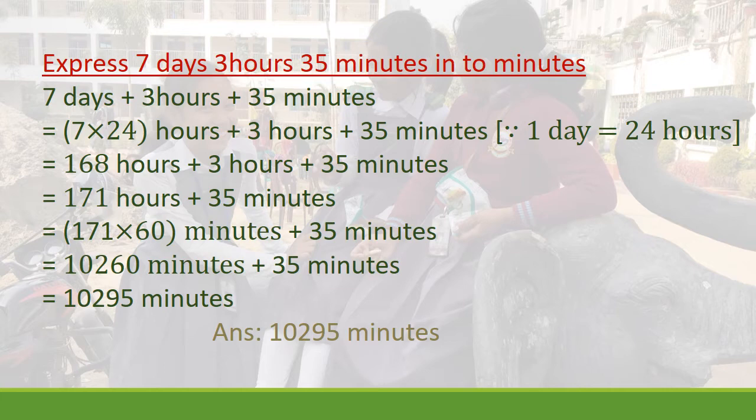Then on the next line: 7 × 24 hours. Why 7 × 24 hours? Because 1 day equals 24 hours, so 7 days times 24 hours — the product is in hours. Plus 3 hours plus 35 minutes. So, 1 day equals 24 hours.